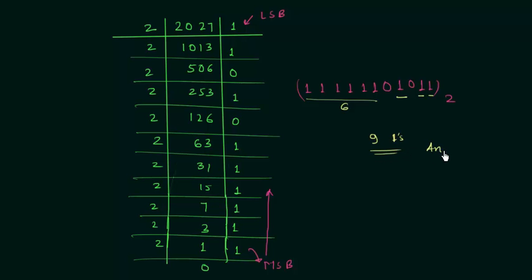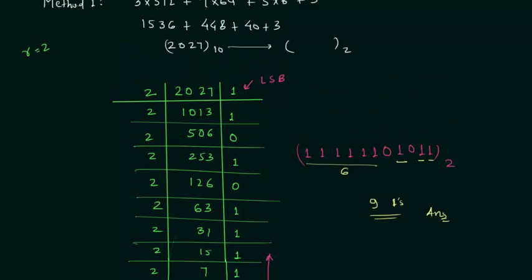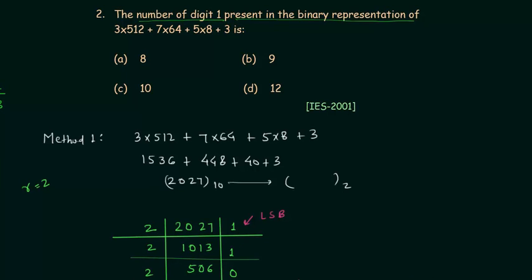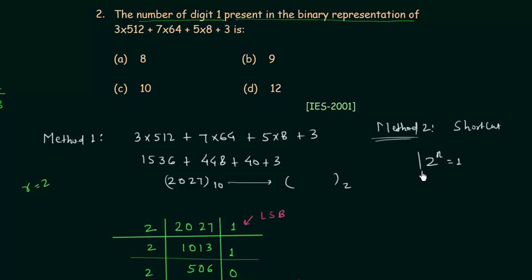This is the first method, where we simply converted the decimal number to binary. In the second method we have a shortcut. We will consider 2 raised to power n equals 1, where n equals 0, 1, 2, and so on. The only thing we have to do is convert the expression into the form of 2 raised to power n.